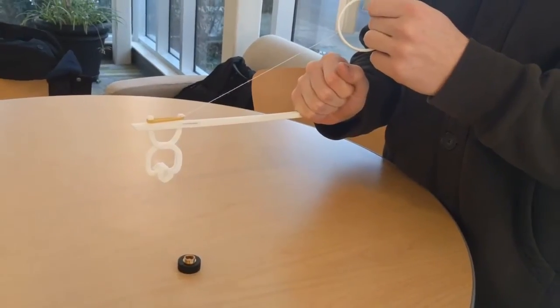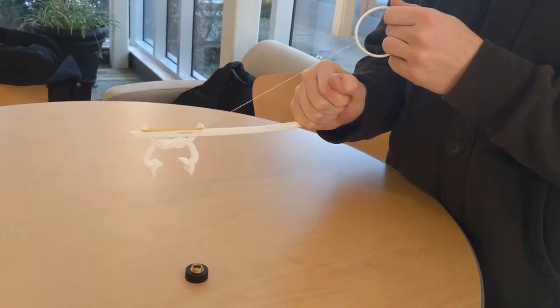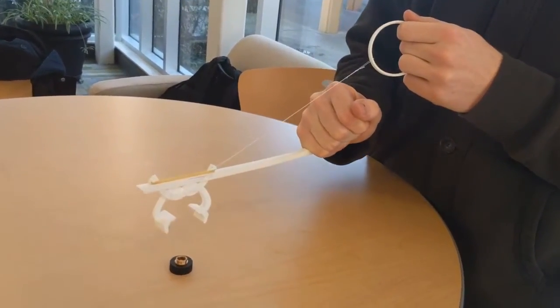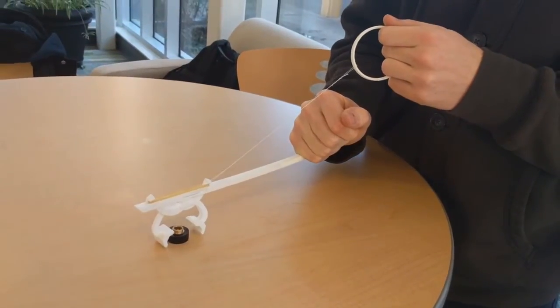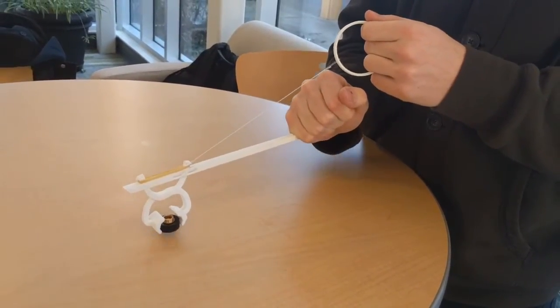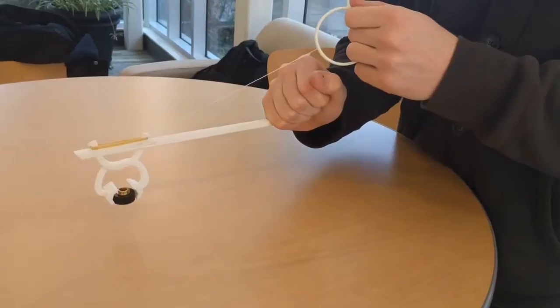To operate the device, Ken simply pulls back on the bracelet with his left arm, counteracting the force of the elastic to open the claw. He then positions the claw over the game piece, and relieves the tension in the string, so that the elastic closes the claw and grasps the piece.